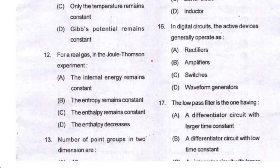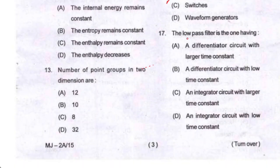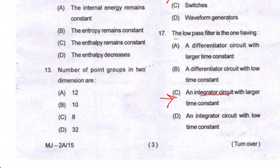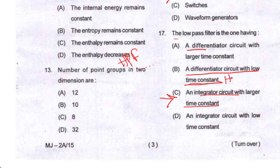Question number sixteen: in digital circuits, the active device generally operates as a switch. So option B is your correct option. Question number seventeen: the low pass filter is an integrator circuit with a large time constant — so option C is correct. The high pass filter is a differentiator circuit with a low time constant.